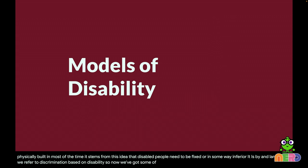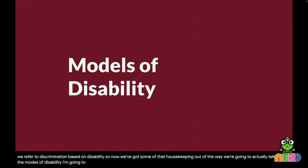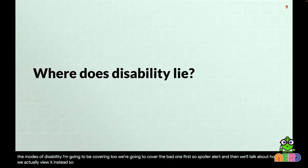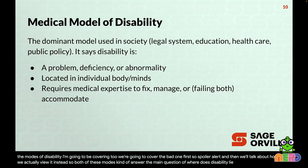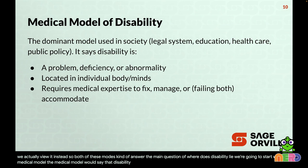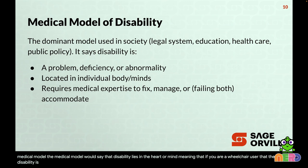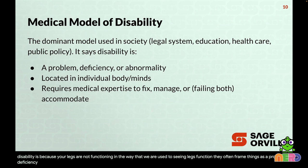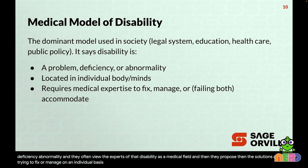Now that we've got terminology out of the way, let's talk about the models of disability. I'm covering two — the bad one first, then how we actually should view it. Both models answer the main question: where does disability lie? The medical model says disability lies in the body or mind. If you're a wheelchair user, the disability is because your legs aren't functioning the way we're used to seeing legs function. It frames things as a problem, deficiency, or abnormality, with the medical field as the expert, and proposes solutions like fixing or managing on an individual basis.